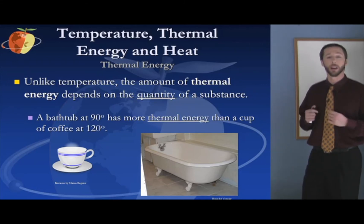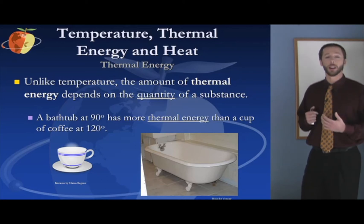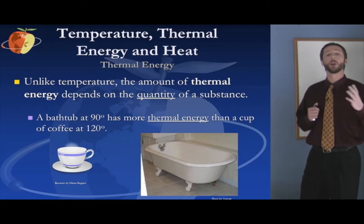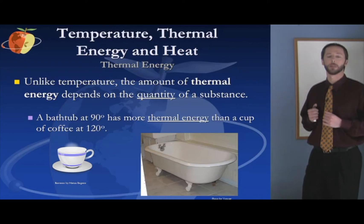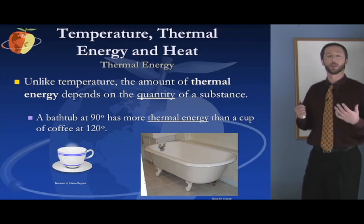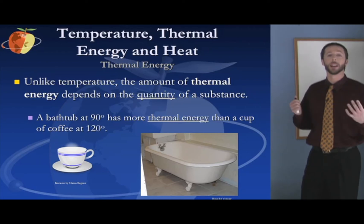That's a way to think about the difference between heat and thermal energy. If on the exam they ask you which has more thermal energy — a vat of molten iron at 2,000 degrees or the Pacific Ocean at roughly 70 to 75 degrees — the answer is the Pacific Ocean, because there's so much more of it. Think of the Pacific Ocean as the world's largest solar panel. It absorbs a great deal of thermal energy and has more thermal energy in it than just about anything on Earth.